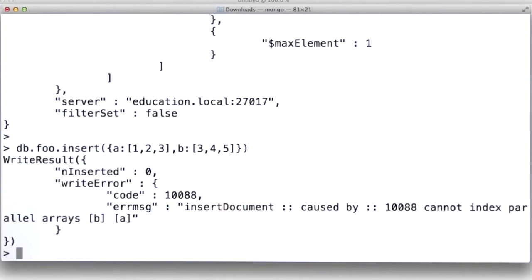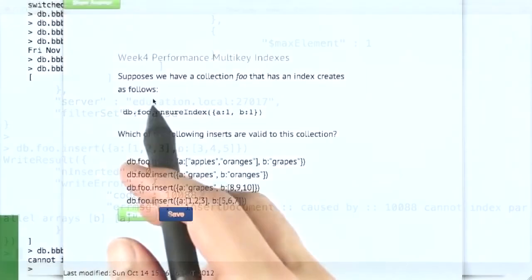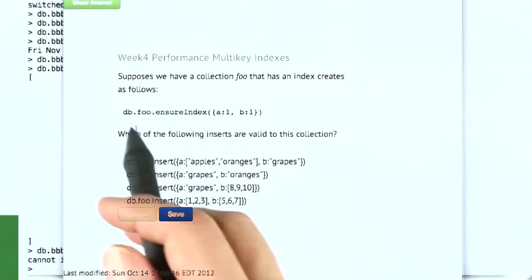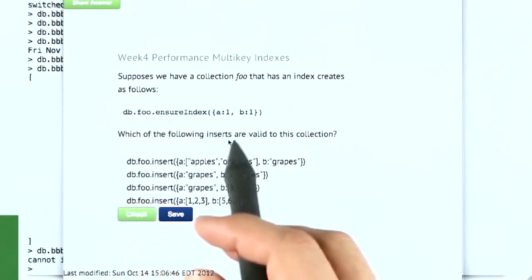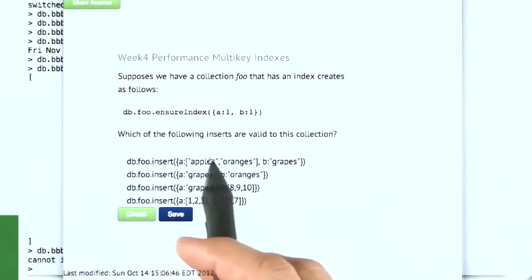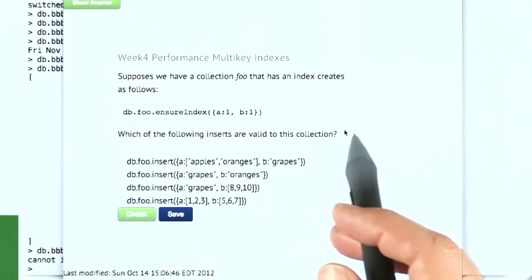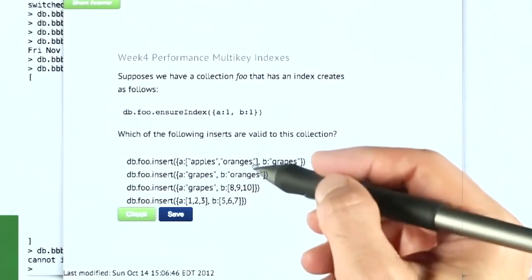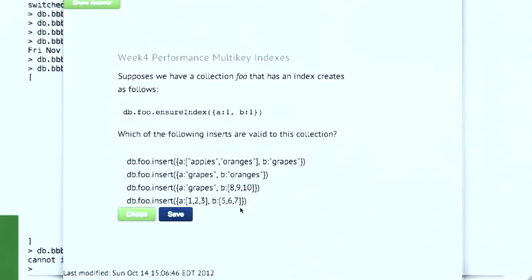And that's the way multi-key indexes work. OK. It is time for a quiz. Suppose we have a collection foo that has an index created as follows: db.foo.ensureIndex A1B1. Which of the following inserts are valid to this collection? And I won't go through them because they're a little bit detailed, but figure out which one of these are valid for the collection.